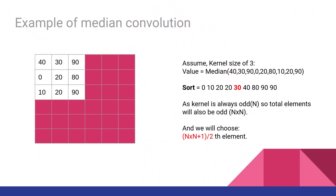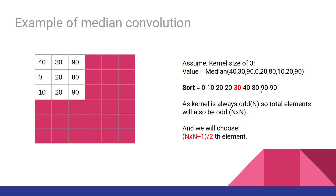Assume we have an image with the top-left pixel values as shown. We want to apply a median filter of size 3, so we first sort the nine elements and choose the central value from the sorted list — in this case it is 30 — and update the output image pixel to 30. Since the kernel is always odd, the total number of elements will always be odd, so you sort the list and choose the (n²+1)/2 element.